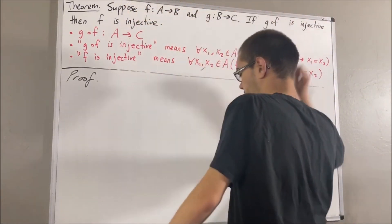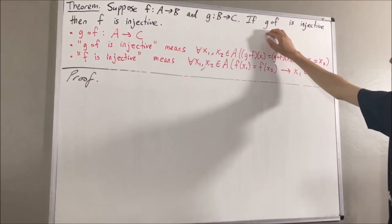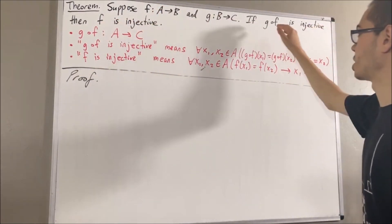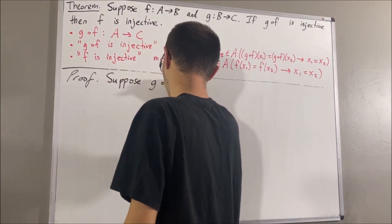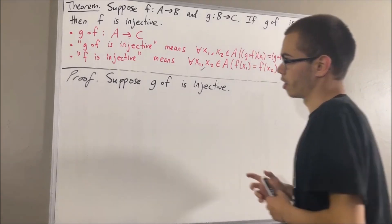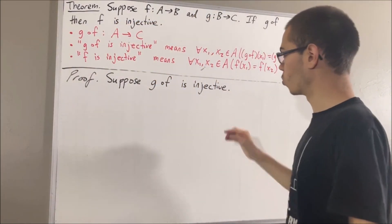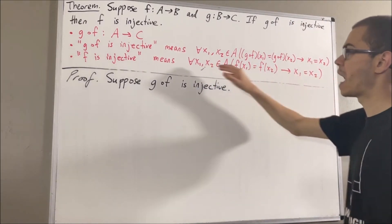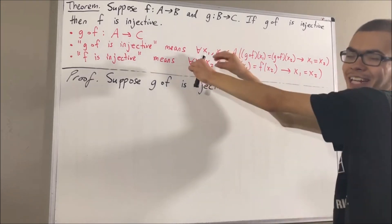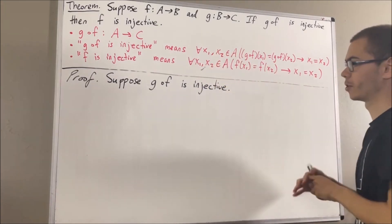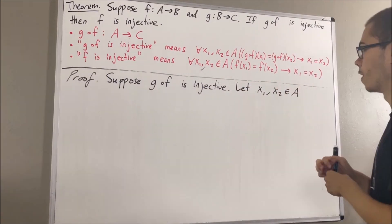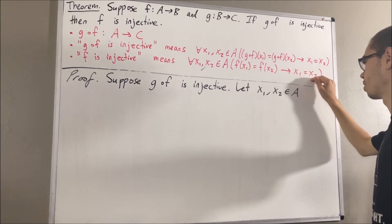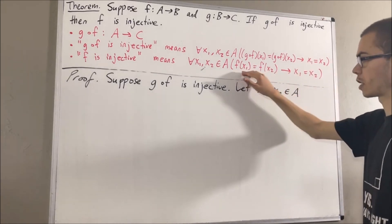So now let's get to proving this theorem. We're trying to prove if g compose f is injective, then f is injective. So let's suppose that g compose f is injective. The whole goal from here is to prove that f is injective. Since we're trying to prove a statement about every two elements in A, let's give ourselves any two elements in A — I'll call them x1 and x2. From here, we want to show if f of x1 equals f of x2, then x1 equals x2. So let's assume that f of x1 equals f of x2.